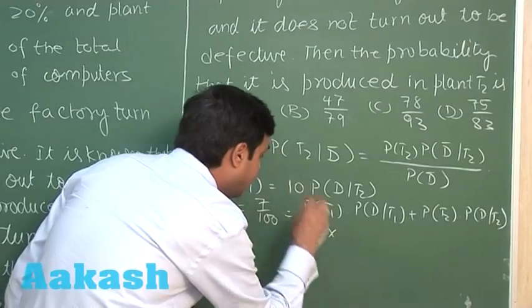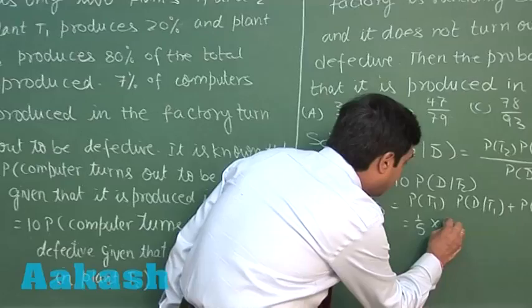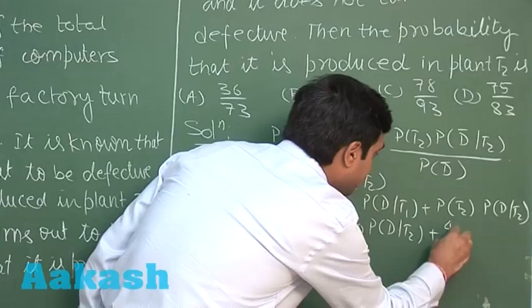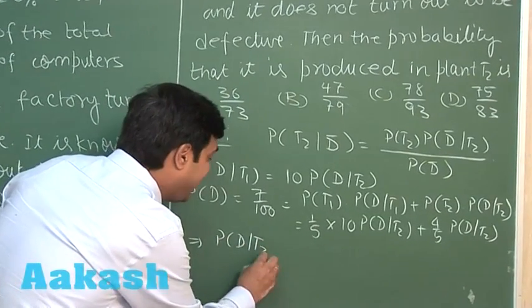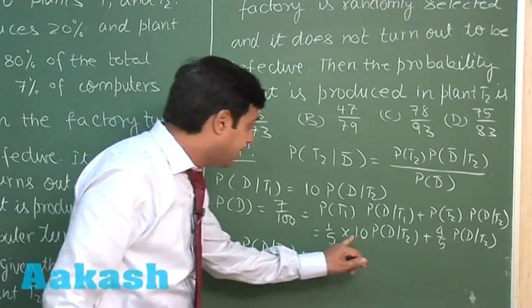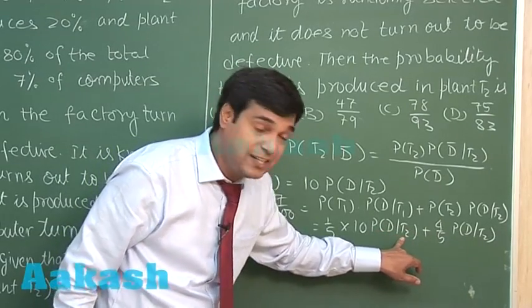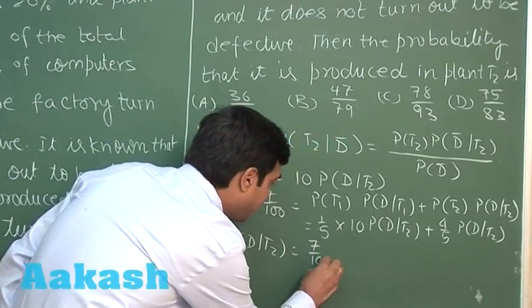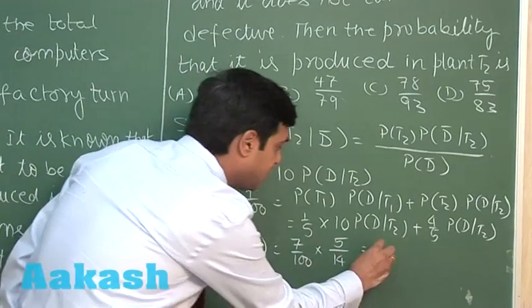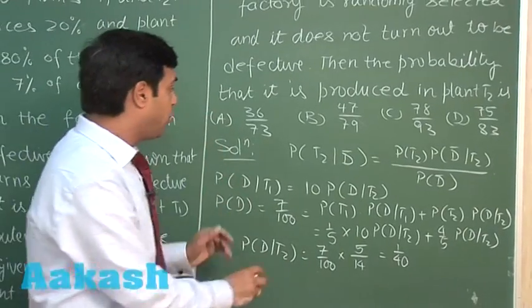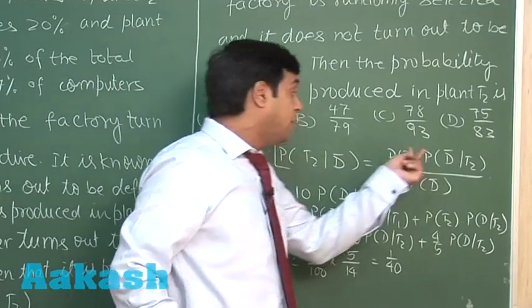Substituting: (1/5) × 10·P(defective | T2) + (4/5) × P(defective | T2) equals 7 by 100. This simplifies to (10/5 + 4/5) × P(defective | T2) = 7/100, that is (14/5) × P(defective | T2) = 7/100. Solving, P(defective | T2) equals 7/100 × 5/14, which simplifies to 1 by 40.